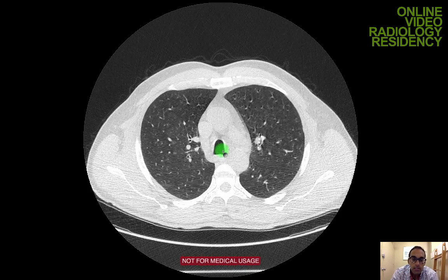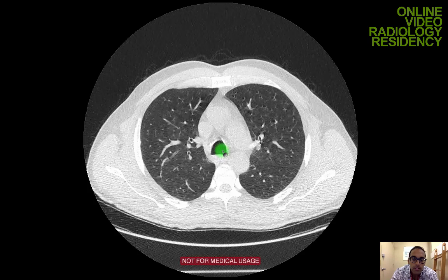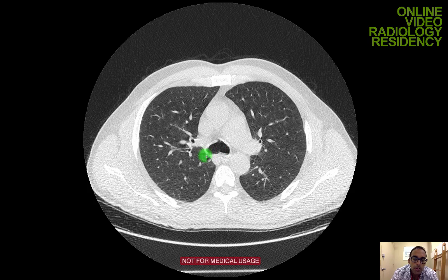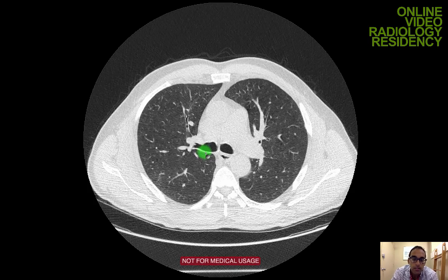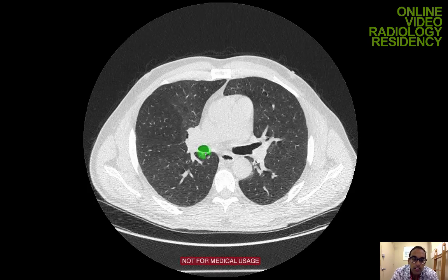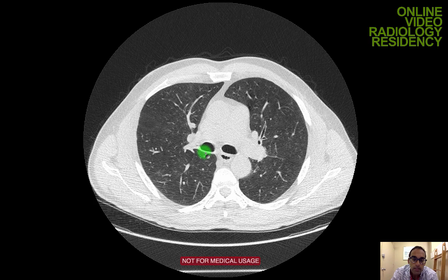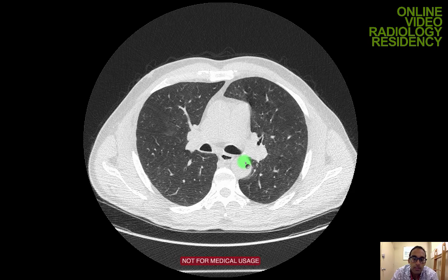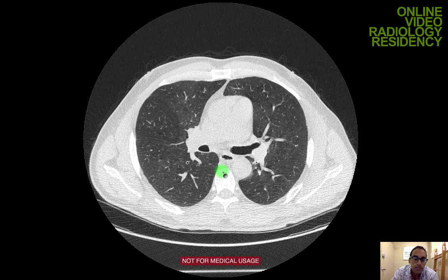The basic approach I have to imaging is: know the technique, know the anatomy really well, and know about common pathologies and how to diagnose them. As far as a search pattern, you want to take the chest and split it up into different anatomic sections, looking at each thing separately — confirming normal anatomy and then trying to exclude common diseases.